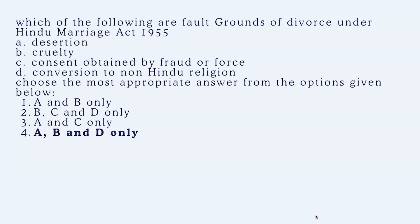For fault grounds under the Hindu Marriage Act, 1955, originally there were nine grounds, but the leprosy ground was removed in 2019, leaving eight grounds. Among the options, desertion and conversion to a non-Hindu religion are fault grounds, while consent obtained by fraud or force is not a ground for divorce. Options A, B, and D are the correct answers.